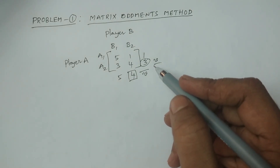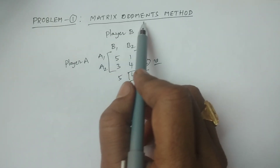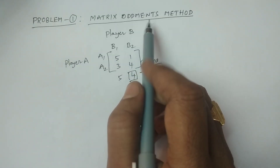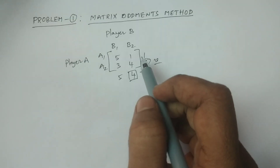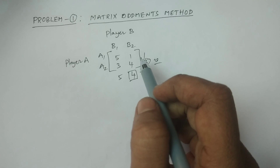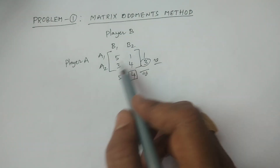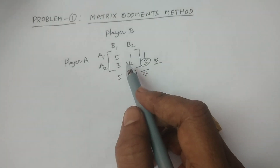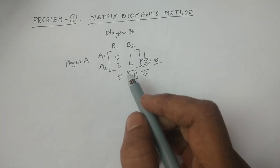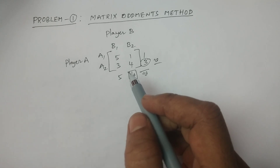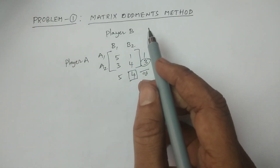If you need to calculate, use the matrix oddments method. The matrix oddments method applies to a square matrix. Here Players A and B each have 2 strategies — a 2x2 matrix. We will solve this game using the matrix augments method.